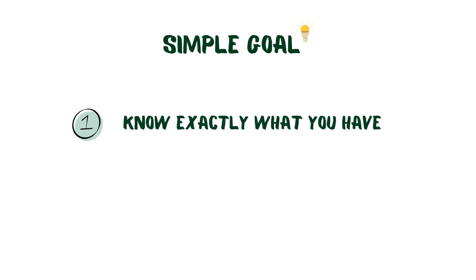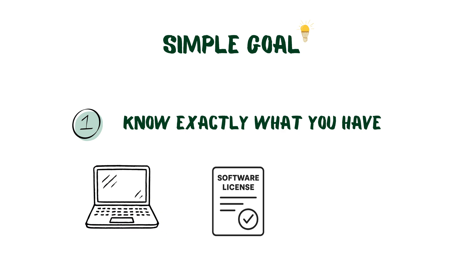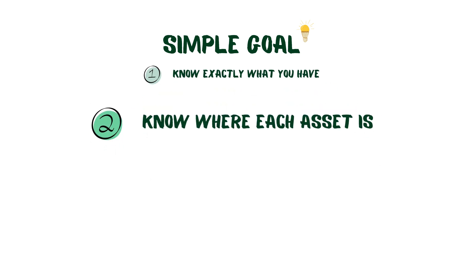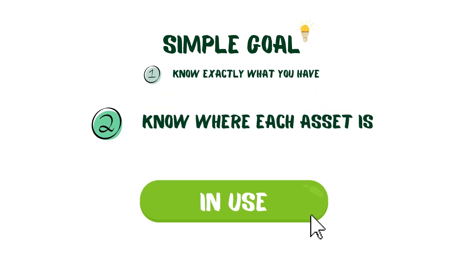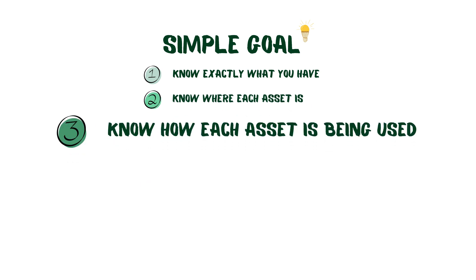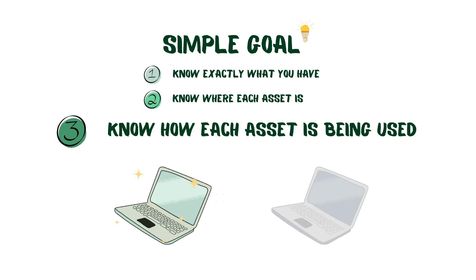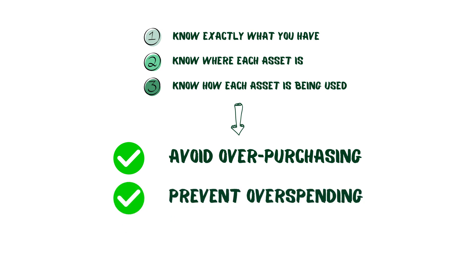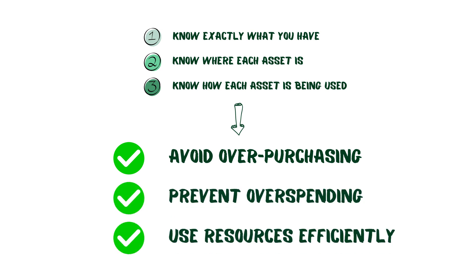The goal of IT inventory management is simple: know exactly what you have — how many laptops, licenses, and devices are in your inventory; know where each asset is, whether it's in use, in storage, or awaiting assignment; and know how each asset is being used, whether it's actively supporting your business or sitting idle. By keeping track of these, you can avoid overpurchasing, prevent overspending, and make sure you're always using your resources efficiently.